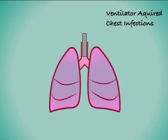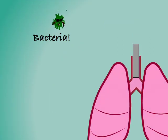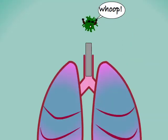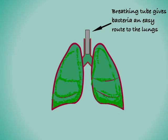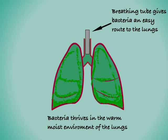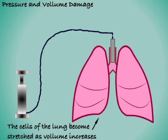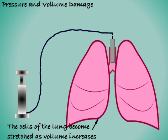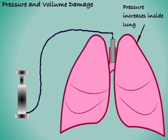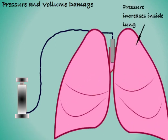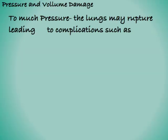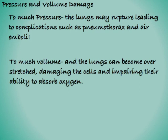Another concern is that the breathing tube inserted down the patient's throat provides a convenient path for germs to get to the lungs, bypassing the mouth's normal defences. Mechanically ventilated patients are therefore at greater risk of getting chest infections. Earlier we compared mechanically ventilating a patient to blowing up a balloon — well, as with balloons, if you push too much air into the lungs and the pressure gets too high, bad things are sure to happen. Too much pressure and volume can cause damage to the lungs and their lining.